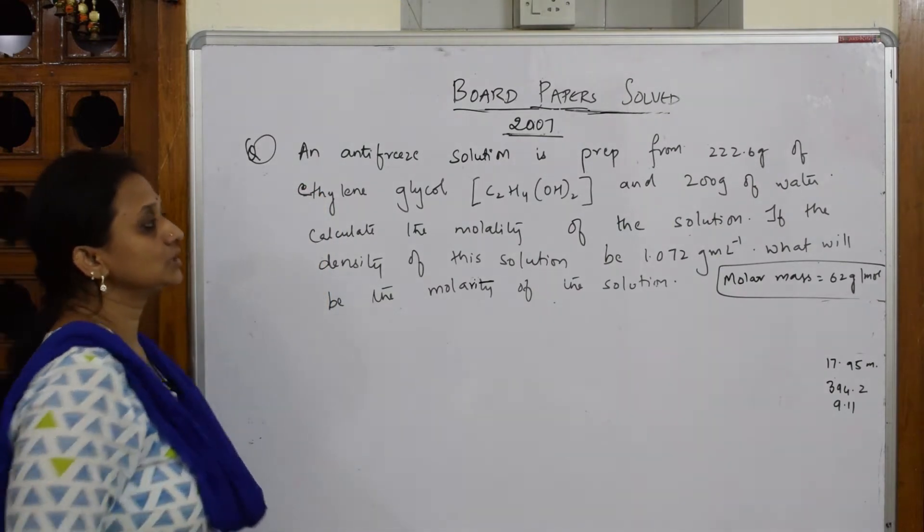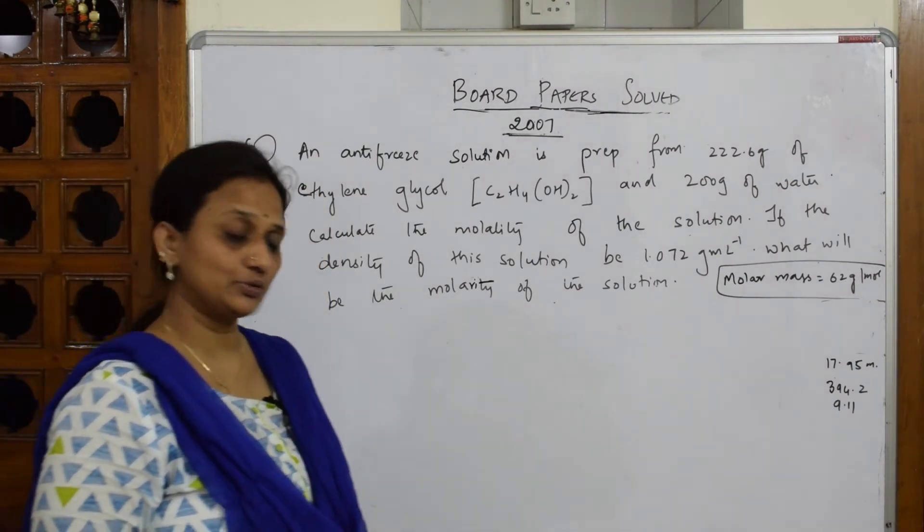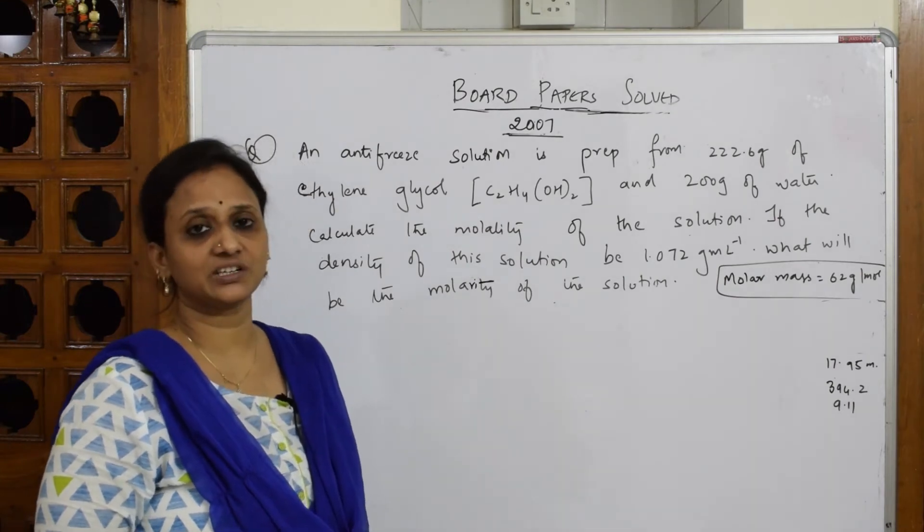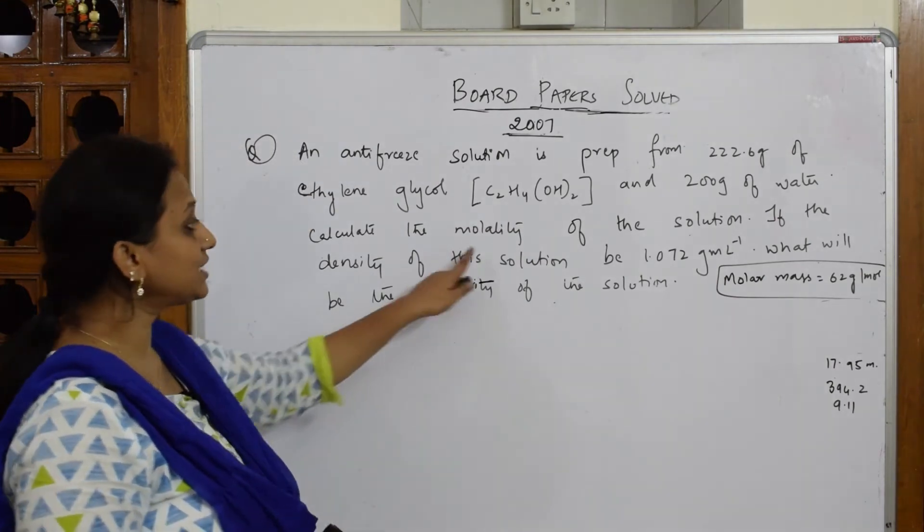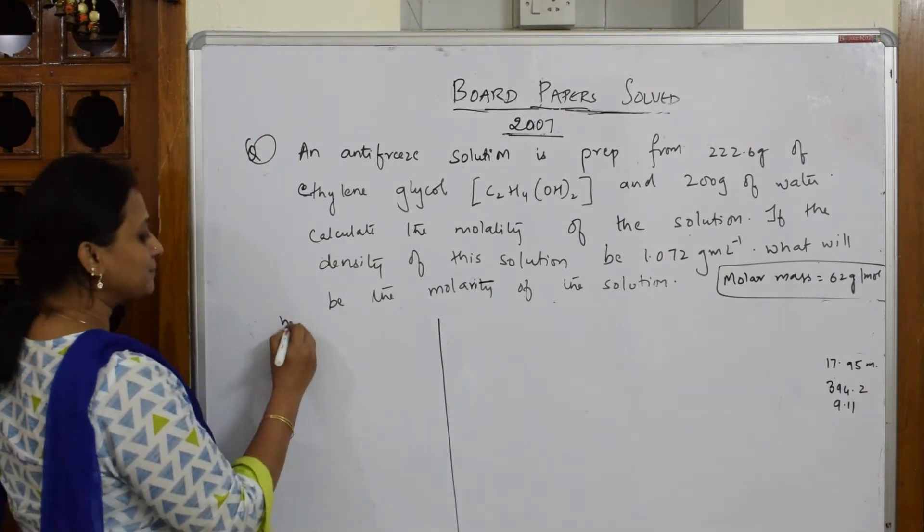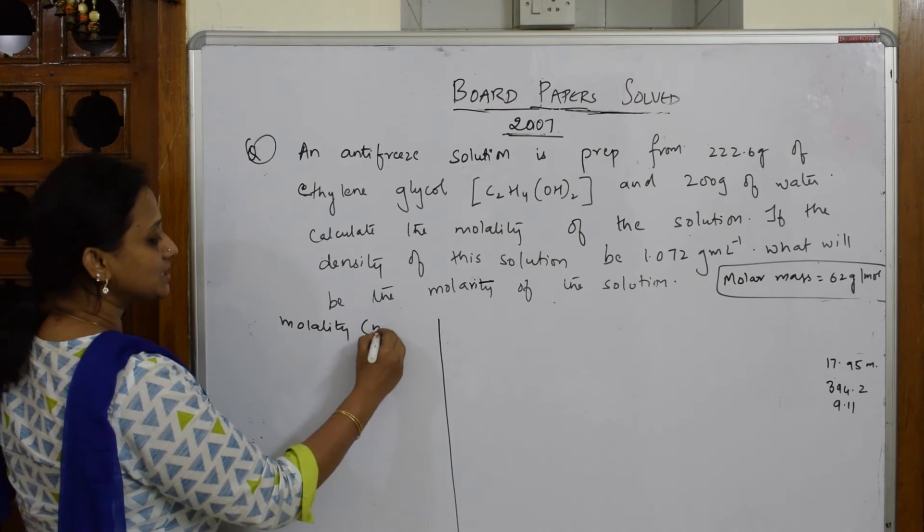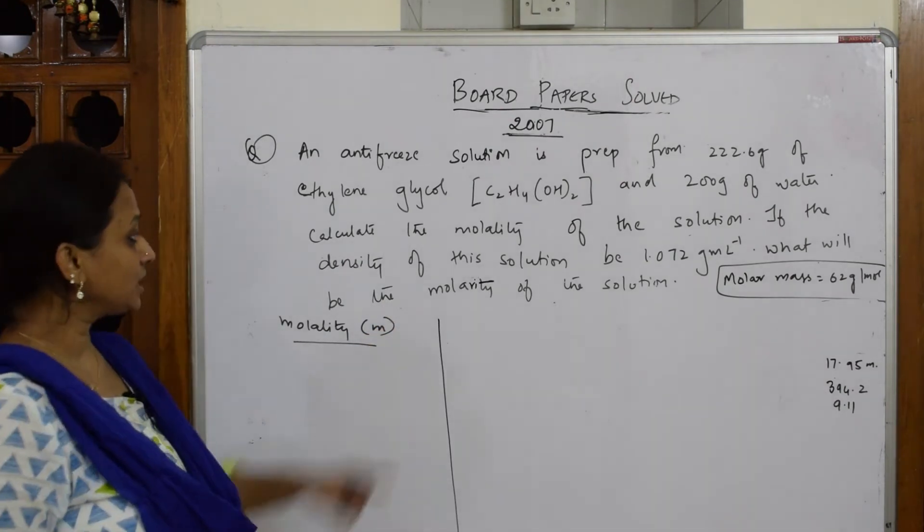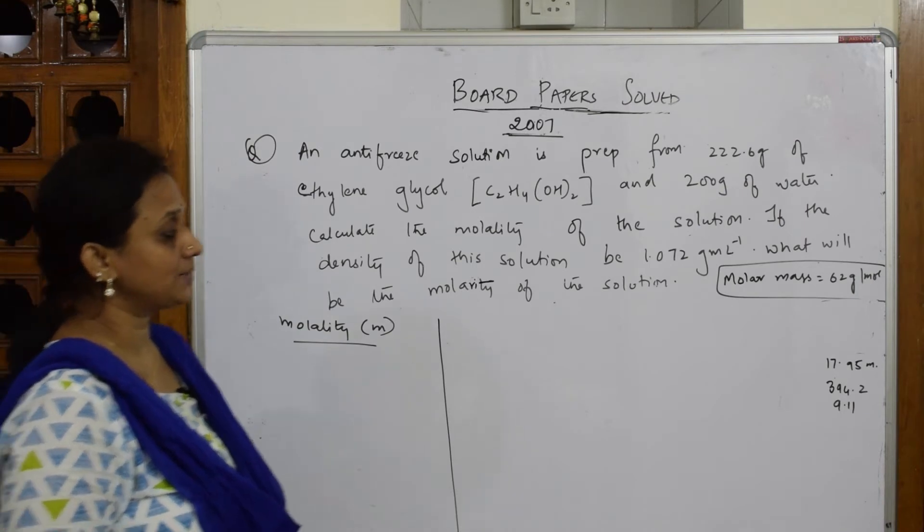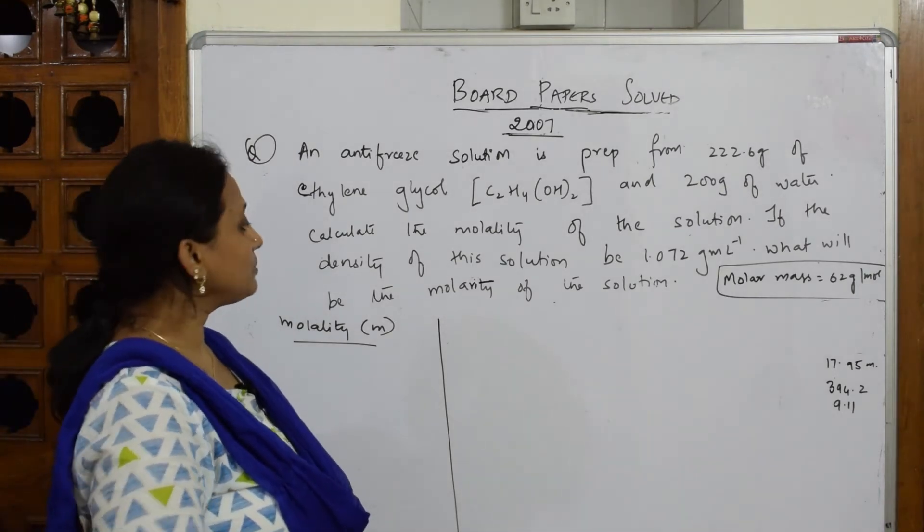Ethylene glycol 222 grams, that is your w2, is taken along with 200 grams of water, which is w1. I have to calculate molality, which is denoted by small m. Then if the density of the solution is 1.072 gram per liter, what will be the molarity? They've asked me molarity also, both things in the same formula.